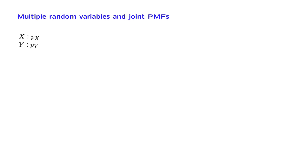So suppose that we have a probabilistic model, and on that model, we have defined two random variables, X and Y, and that we have available their individual PMFs. These PMFs tell us about one random variable at a time — this one tells us about X, and this one tells us about Y.